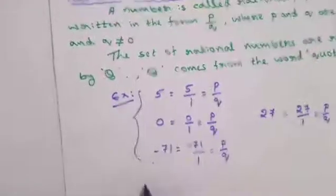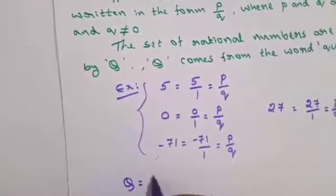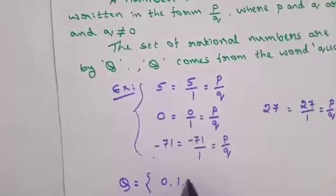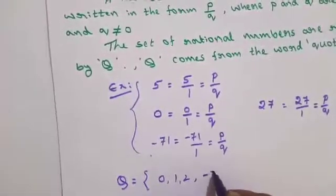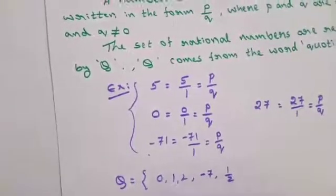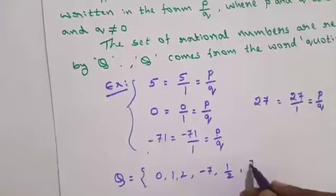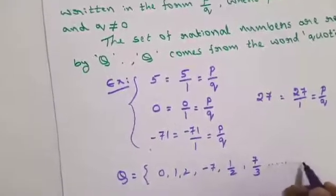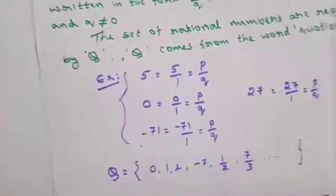The rational number set Q is equal to: 0, 1, 2, negative numbers like minus 7, fractions like 1 by 2 — these are all rational numbers. This is an infinite set, all over the number line.